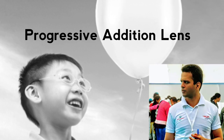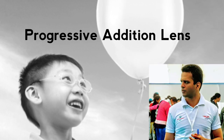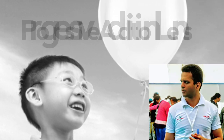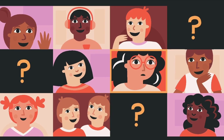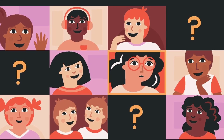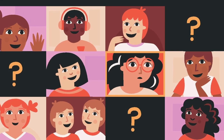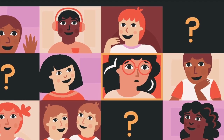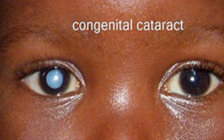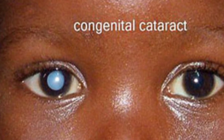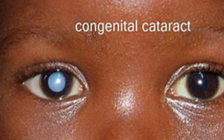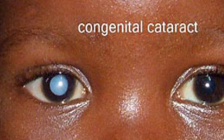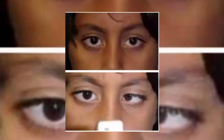Can we dispense progressive addition lenses to children? The answer is yes. There are a few conditions where a progressive addition lens can be dispensed to a child. The first condition is pseudophakia — post-cataract surgery in children. The second condition is convergence excess accommodative esotropia.